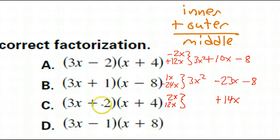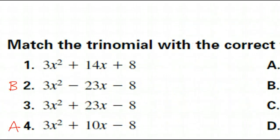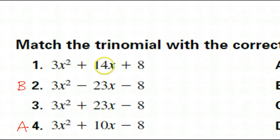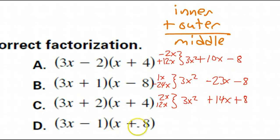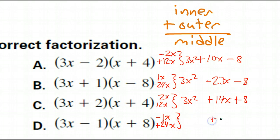That means the last one must be D, but let's follow through and check it. Inner plus outer equals middle. Inner I have negative 1x, outer I have positive 24x — together positive 23x. Negative 1 times positive 8 is negative 8. So that makes 3x squared plus 23x minus 8, which is D.